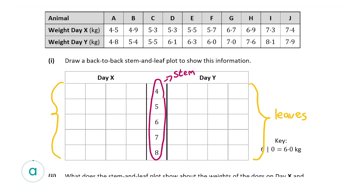All the first digits will be down the stem from 4 to 8, and the second digit of all the numbers will be either on the left-hand side for the weights on day X, or on the right-hand side for their weights on day Y. We'll start with day X, starting from A and working our way up to J.